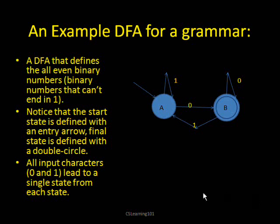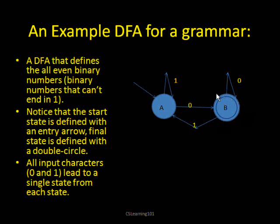Here's an example of a DFA for grammar. This grammar defines all the binary numbers that are even. If you know what binary numbers are, you know that they consist of ones and zeros. So an even binary number is a binary number such that it ends in a zero every time. Notice that here there is a start state, defined by an arrow entering the machine, and also a final state, defined by a state with two circles. All input characters, which in this case are zero and one, lead to some state from each state. And if you were to trace it, any string of ones and zeros will go through this machine somehow. If it ends in the final state, then that means the string we just entered would be acceptable.